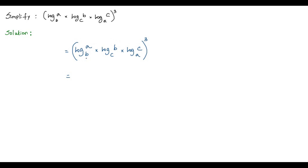Now I mark the base of the first logarithm and the argument of the second logarithm. We remove this marked area and write a new logarithm with the argument A and base C. So the result of multiplying the first two logarithms is log A to the base C.